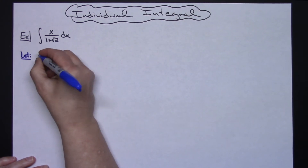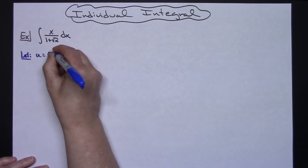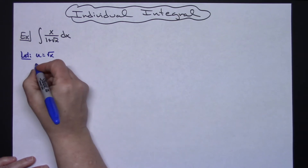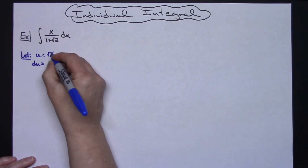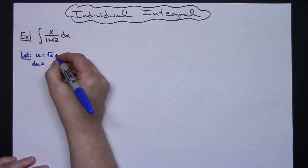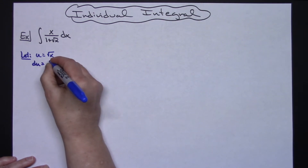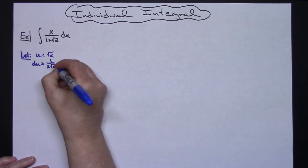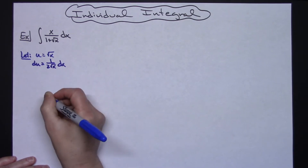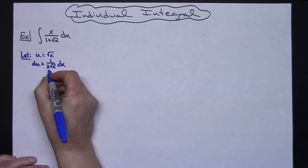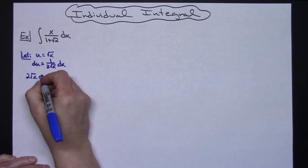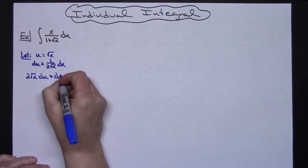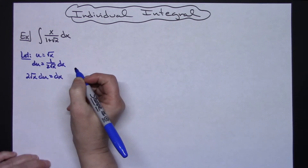We're going to let u equal square root of x. Taking the derivative of both sides, du is equal to 1 over 2 square root of x dx. Then multiplying both sides by 2 square root of x gives us 2 square root of x du equals dx.